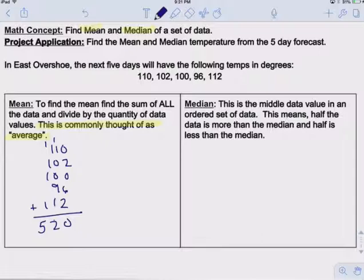This is not our mean. This is just the total of all five temperatures. Remember, first we find the sum of all the data, and then we're going to divide by the quantity of data. We have five numbers here.